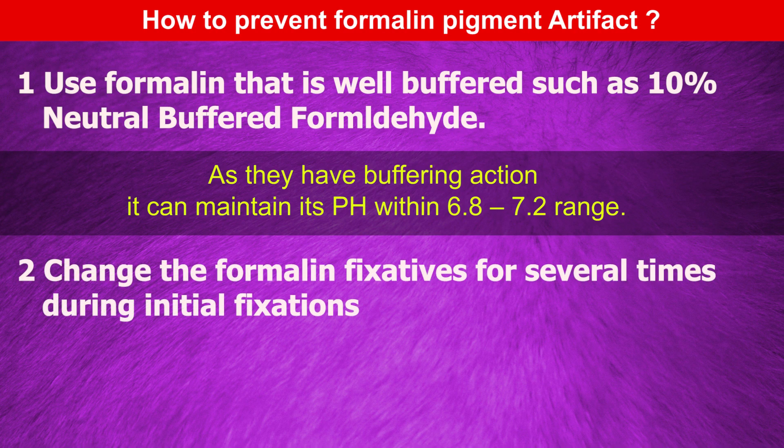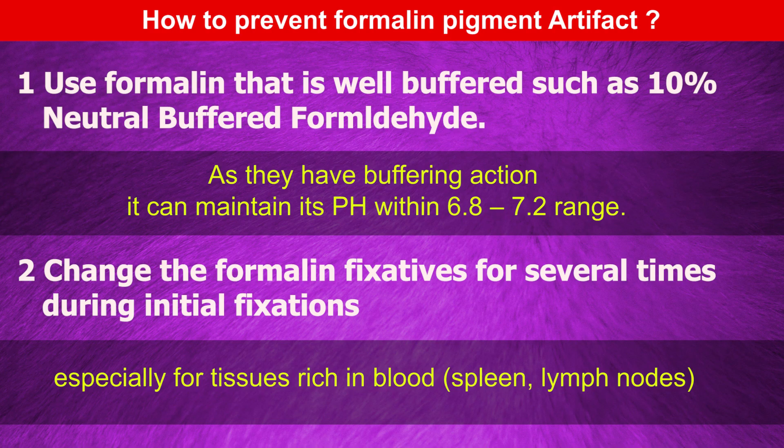Another way is to change the formalin fixative several times during initial fixation, especially for tissues rich in blood such as the brain or lymph nodes. This is how we can prevent the acid formalin pigment artifact during histology.